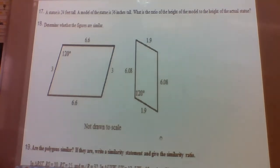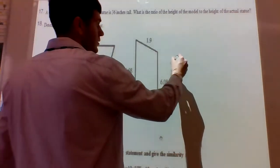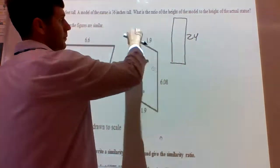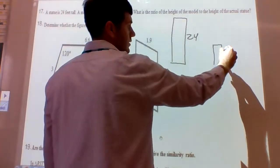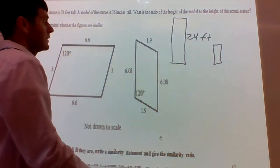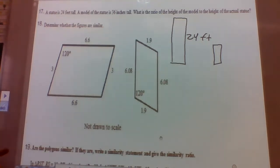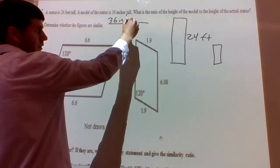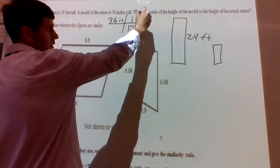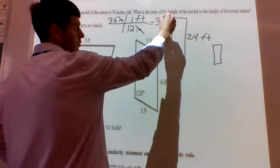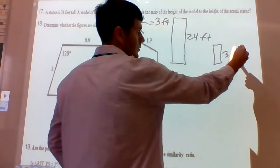Problem 17: a statue is 24 feet tall and a model of the statue is 36 inches tall. What is the ratio of the height of the model to the height of the actual statue? We have the statue at 24 feet and the model at 36 inches. Let's convert inches to feet so we have the same units. 36 inches divided by 12 inches per foot gives us 3 feet.